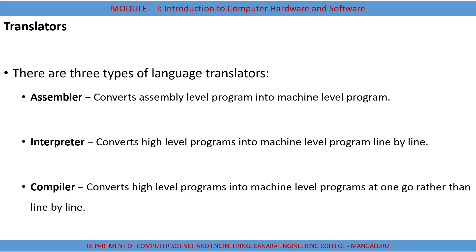The assembler converts assembly level language to machine language — a program written in assembly language is converted to machine language. Similarly, we have the interpreter, which converts high level programs to machine level programs line by line. The compiler also converts high level programs into machine level programs, but it compiles the whole program at once rather than line by line. That is the major difference between interpreter and compiler, and both are normally used in high level languages.